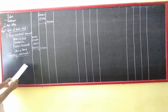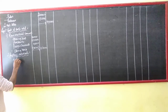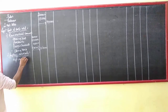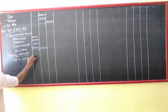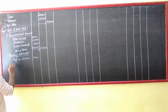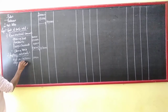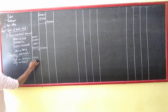Depreciation on factory and plant, depreciation on patterns: 10,000, depreciation on machinery: 20,000.